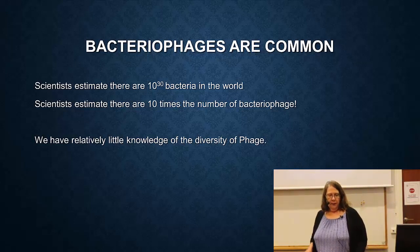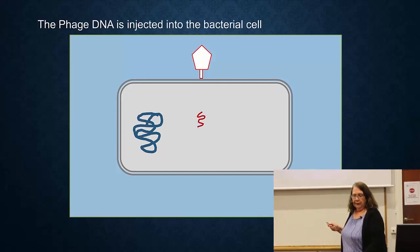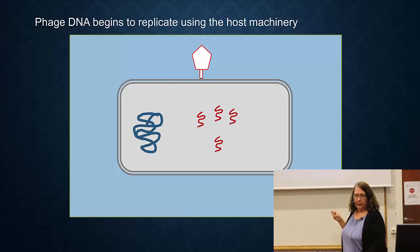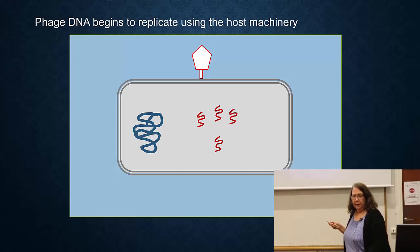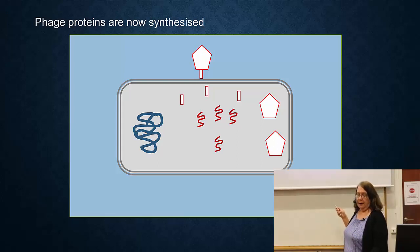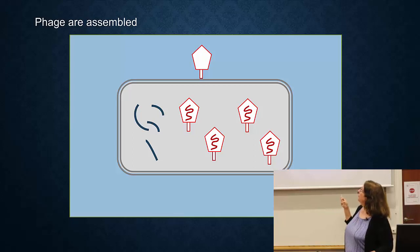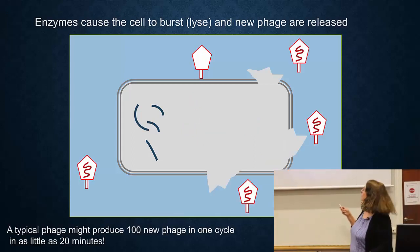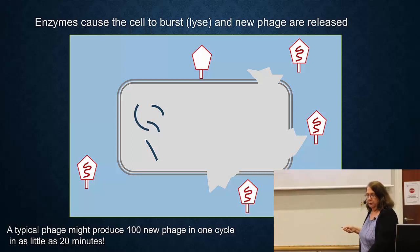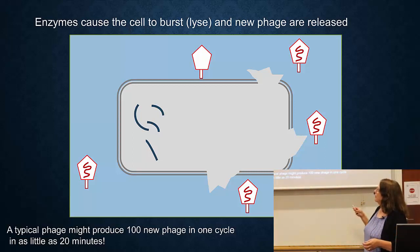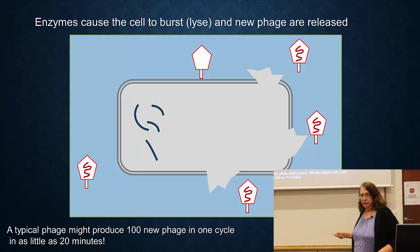A bacteriophage finds a bacteria, attaches to it, and injects the DNA into the cell. That DNA is then copied and you get lots of copies. You then start to make new proteins from that DNA to make new phages. During this process the host chromosome is often broken up into pieces, and finally you've got new phages inside the cell. Proteins are made that cause the cell to explode and the phages go out and infect another bacteria. A typical phage might produce a hundred new phage in just 20 minutes - this is extremely effective.